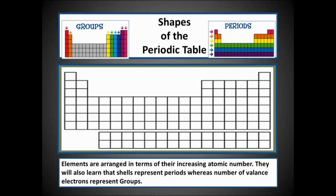The shape of the periodic table: groups run from top to bottom as vertical columns, while periods run from left to right as horizontal rows. Elements are arranged in terms of their increasing atomic number. Shells represent the period number — there are seven periods — while the number of valence electrons represents the group.